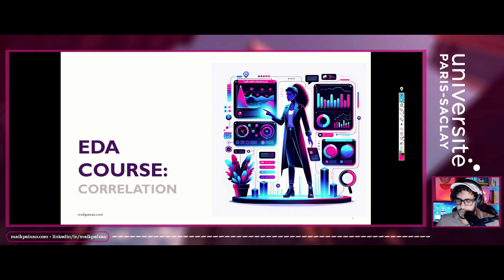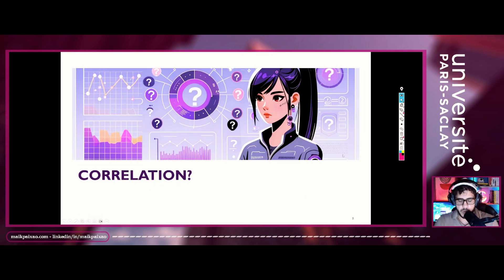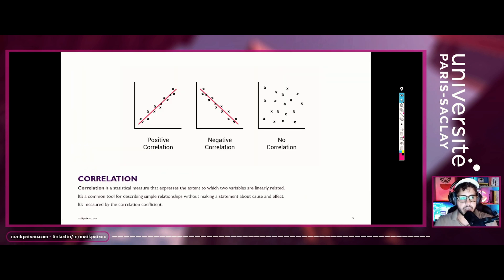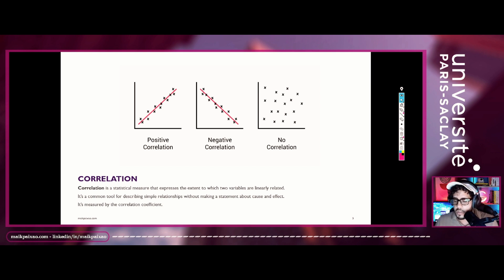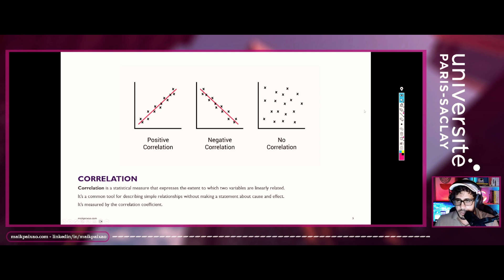Today we're going to talk about correlation. A correlation is a statistical measure that expresses the extent to which two variables are linearly related. It's a common tool for describing simple relationships without making a statement about cause and effect.